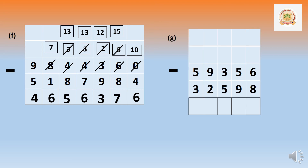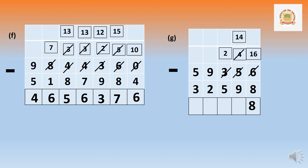Next question g: 59,356 minus 32,598. In ones: 6 cannot minus 8. Borrow from 50 — it becomes 40. After taking, 6 becomes 16. Sixteen minus 8 equals 8. The 4 becomes 3 after giving. Borrow from 3 — it becomes 14, and 3 becomes 2. Fourteen minus 9 equals 5.